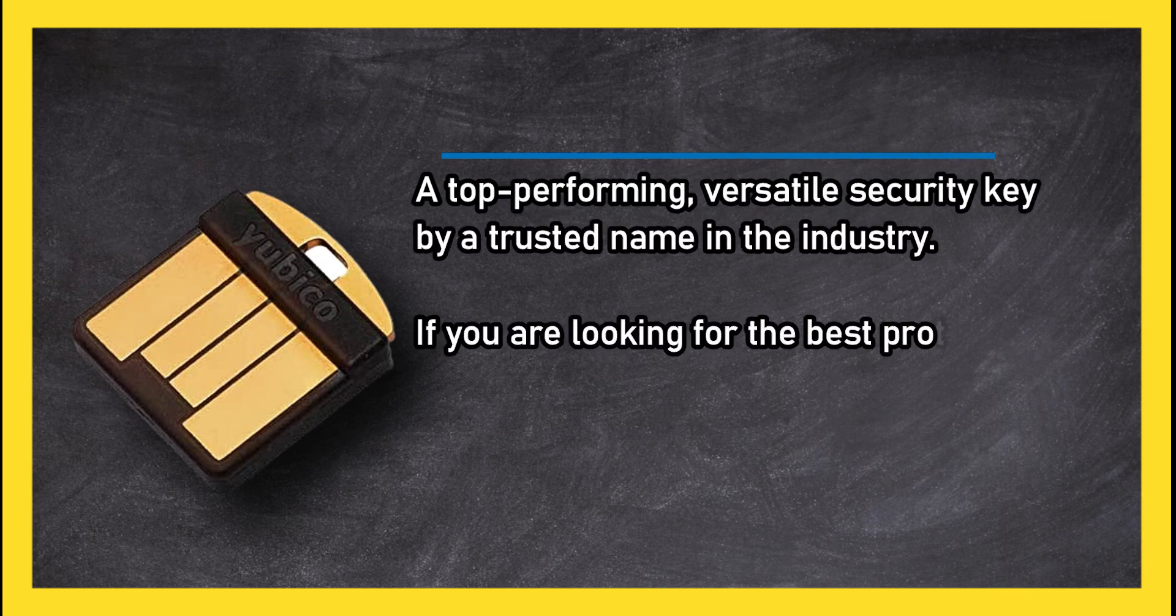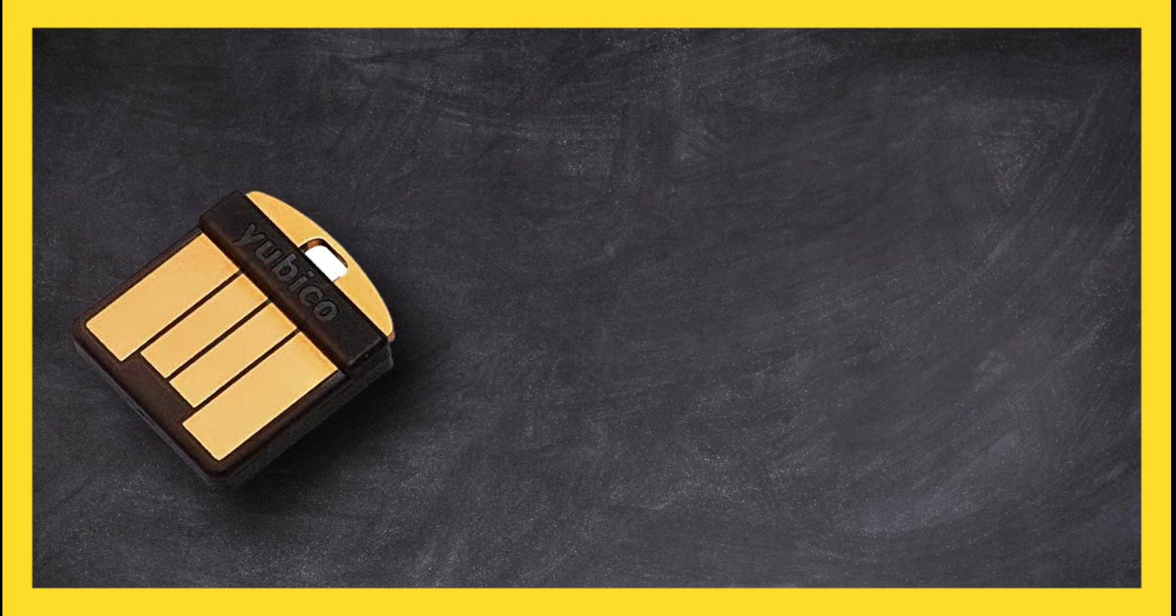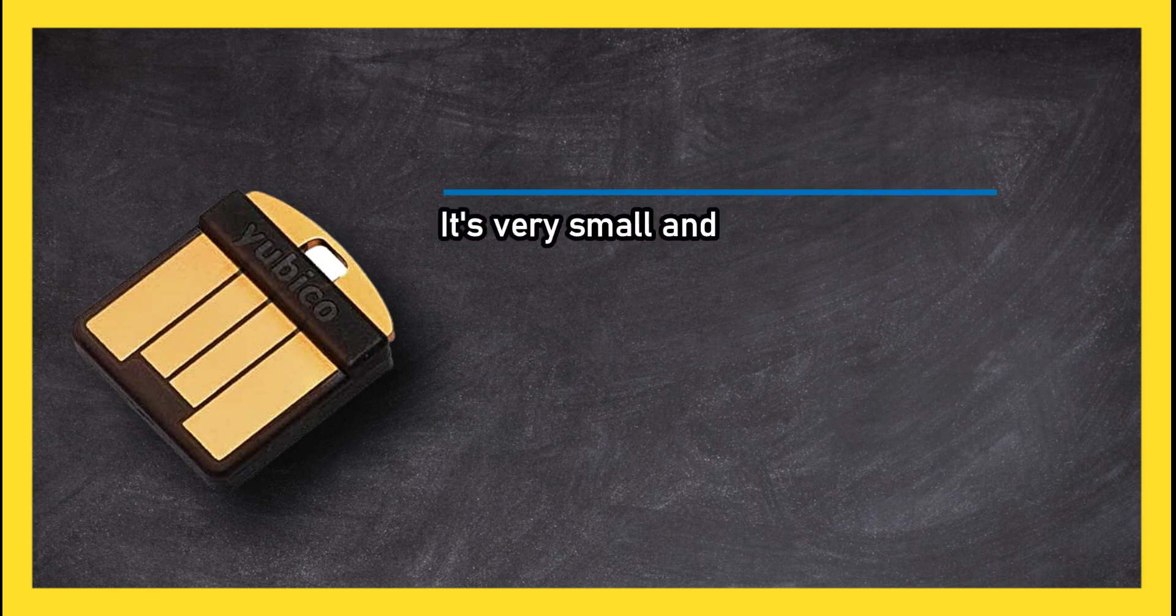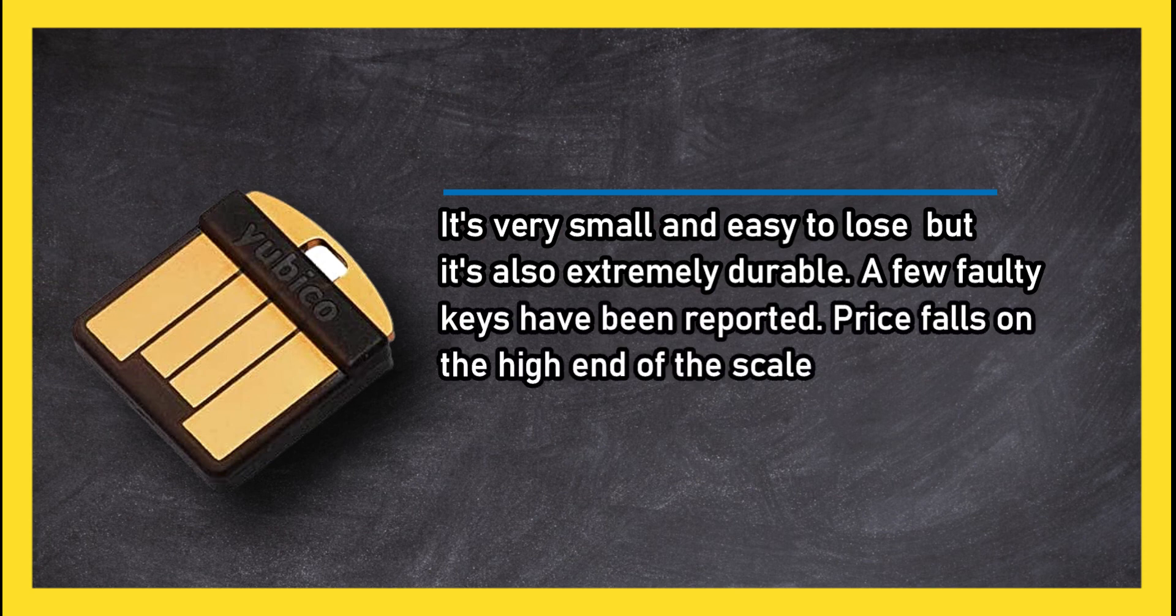If you are looking for the best protection available, the Yubikey 5 Nano is the one to buy. It's very small and easy to lose, but it's also extremely durable. A few faulty keys have been reported. Price falls on the high end of the scale.